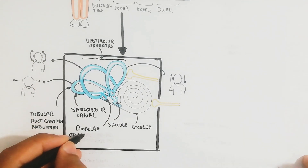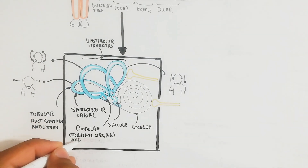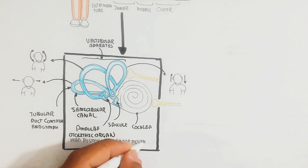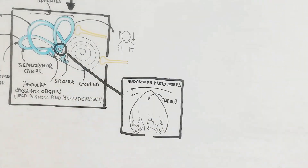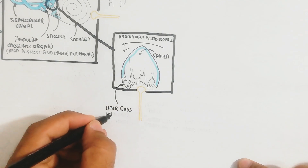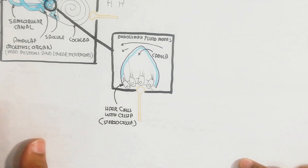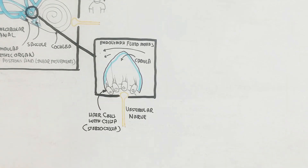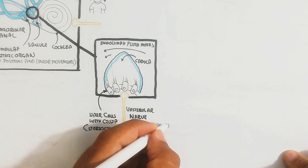The cochlea and otolith organs are present in the ampulla and saccule, which lead to head position and linear movement control. The ampulla and saccule contain the cupula, which is surrounded around the hair cells with cilia, known as stereocilia.